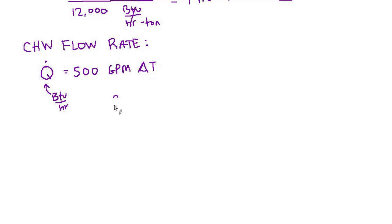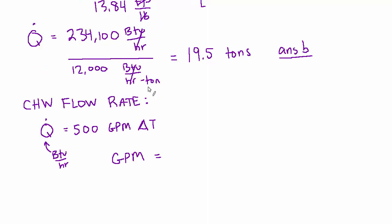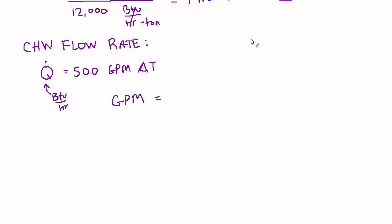So we can pretty much apply this directly. Let's just solve for GPM. It's going to be Q dot over 500 and delta T. So Q dot was 234,100. And I'm not going to write the units because this is a rule of thumb. So it's already working out the units for us. As long as we put the right units in, we'll get the right units out. We divide by 500 and we divide by the delta T, which was 55 minus 42, which is 13. And we get 36 GPM. And that is answer C.